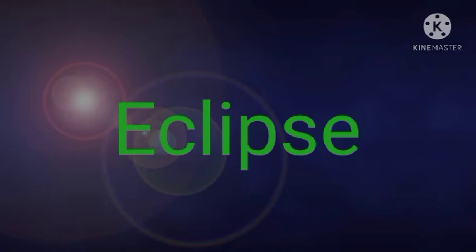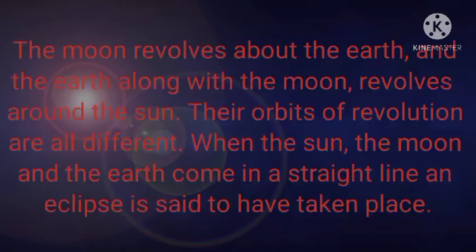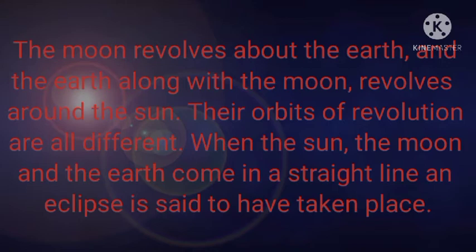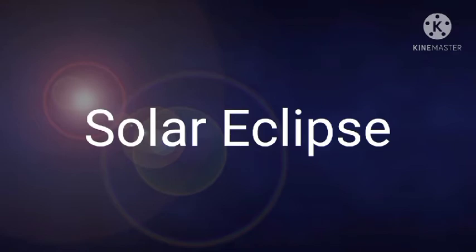There are two types of eclipses: solar eclipse and lunar eclipse. The reason behind eclipses is that the moon revolves around the earth and the earth along with the moon revolves around the sun. Their orbits of revolution are all different. When the sun, the moon, and the earth come in a straight line, an eclipse is said to occur — only then is an eclipse possible.